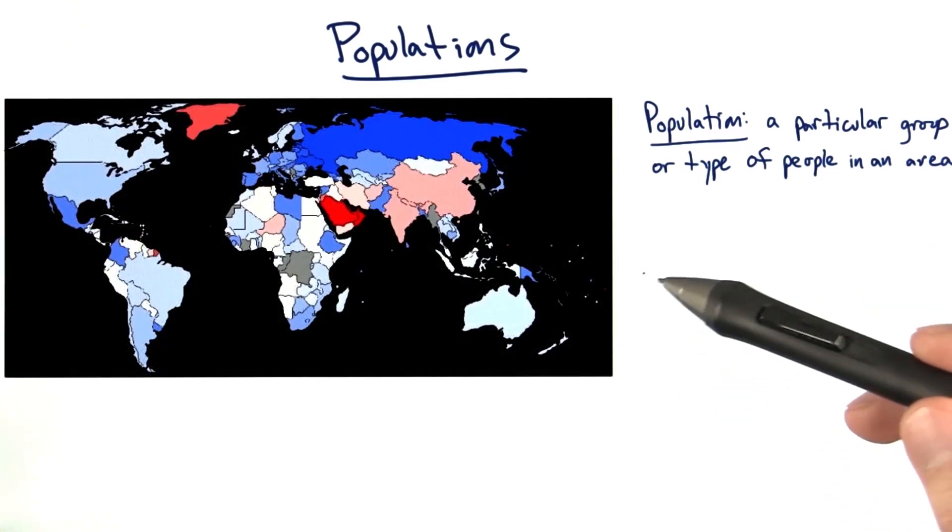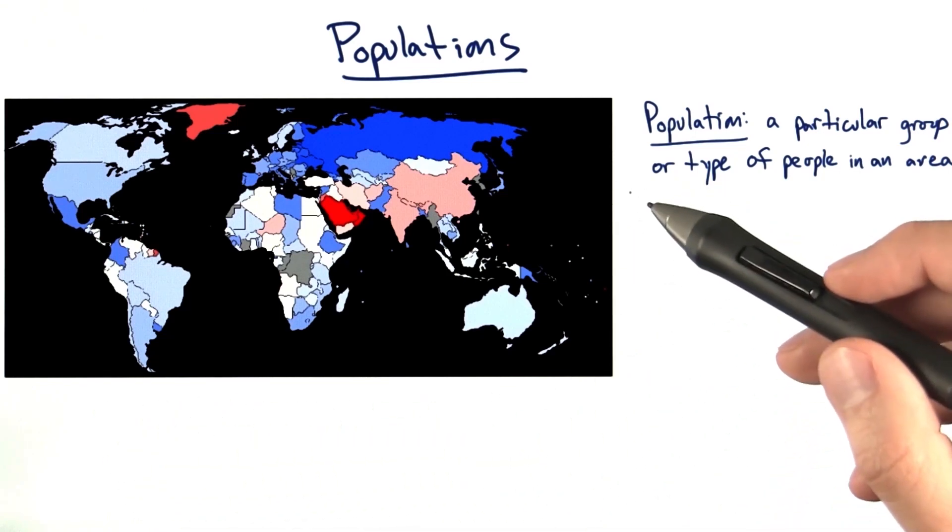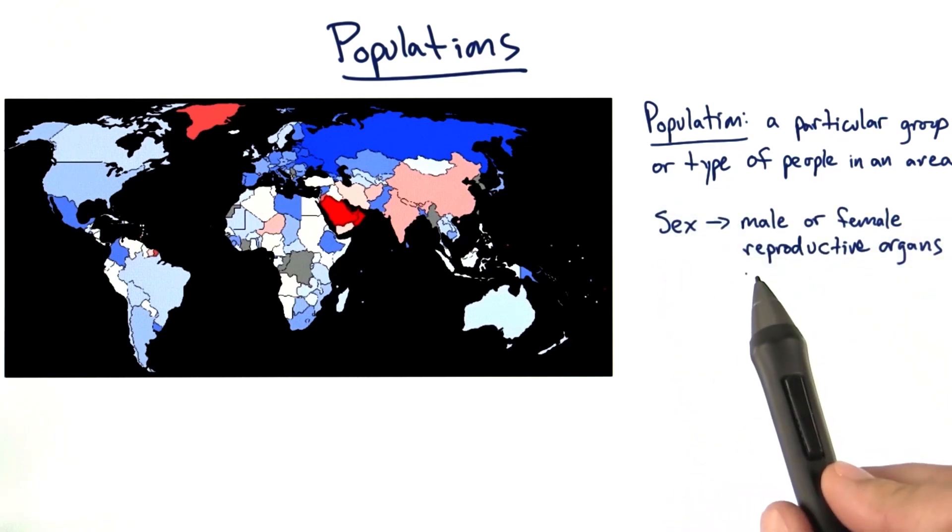For example, here's a map of the world divided by countries, showing you the breakdown for the trait of sex. For our purposes, sex simply means whether or not you have male or female reproductive organs.